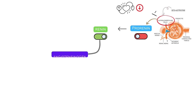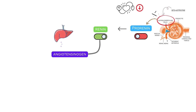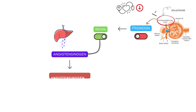Once renin is secreted in the blood, it finds its target: angiotensinogen. Angiotensinogen, which is secreted by the liver and continuously circulates in the bloodstream, is caught up by renin. Renin then breaks down the angiotensinogen and forms the second player in action, angiotensin 1.